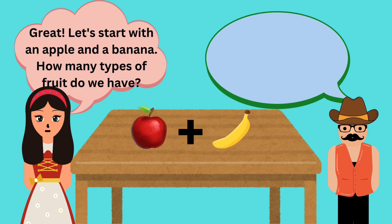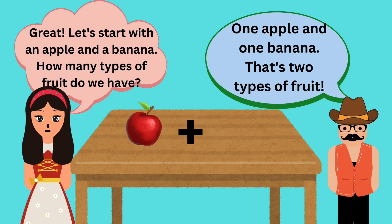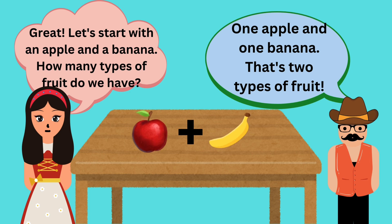Let's start with an apple and a banana. How many types of fruit do we have? One apple and one banana. That's two types of fruit. Yeah!